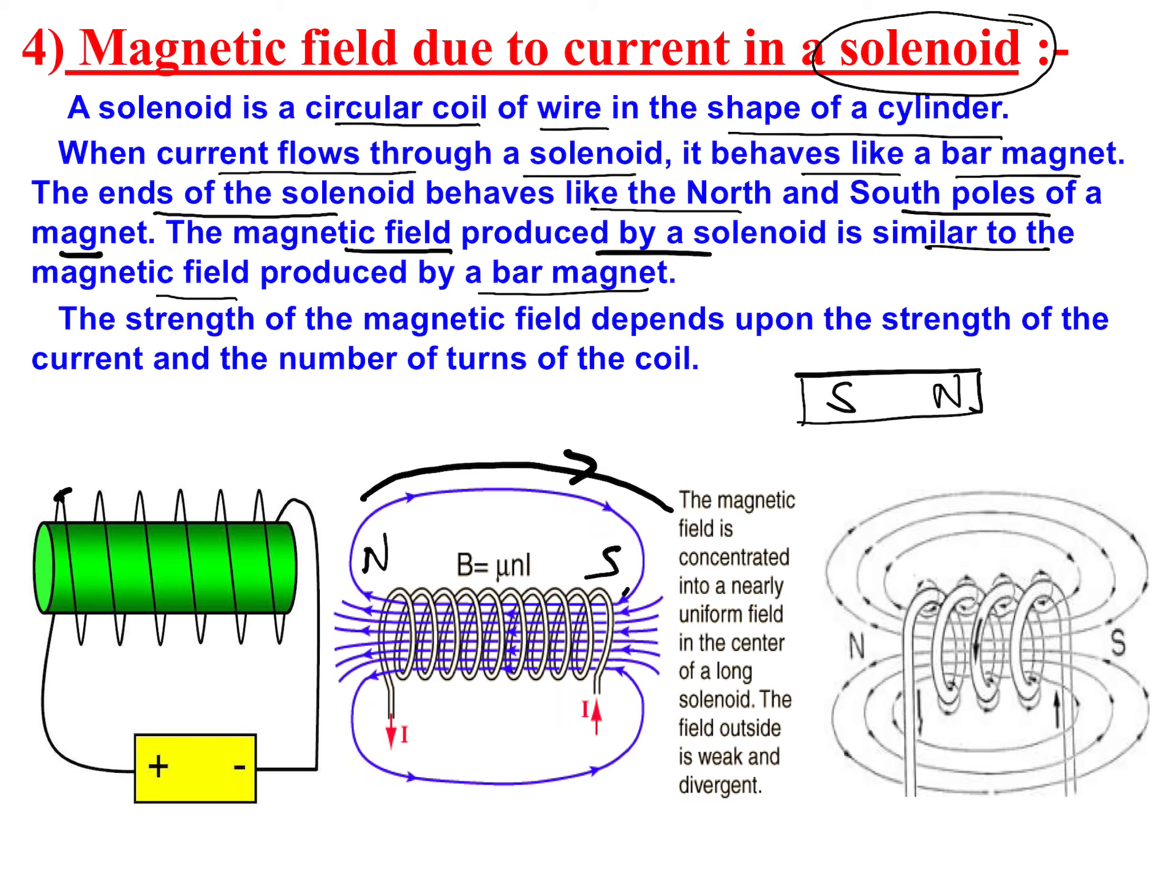This is shown by the battery. If this is the positive terminal and this is the negative terminal, then current will flow from positive to negative terminal through the coil.